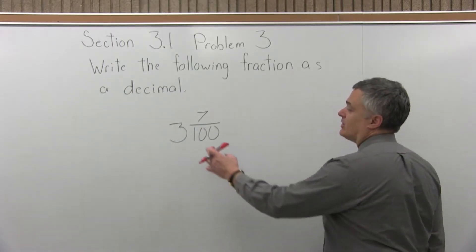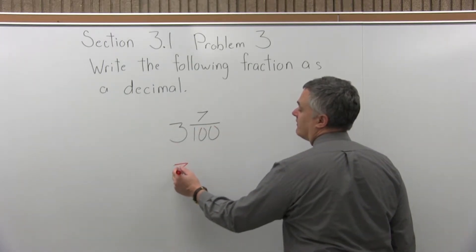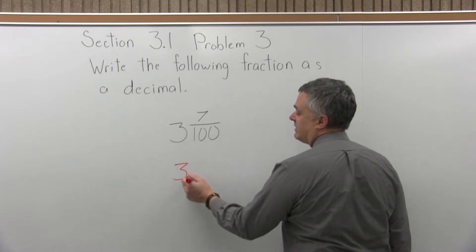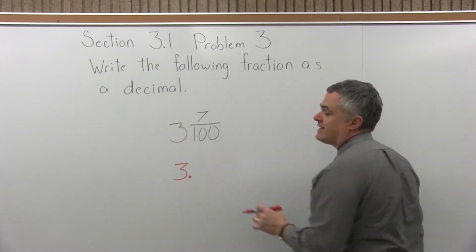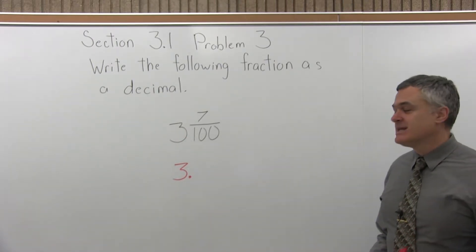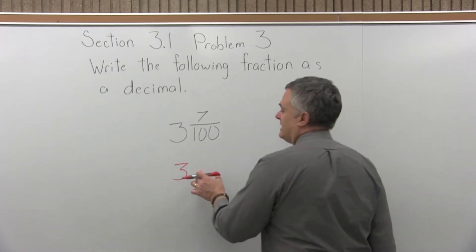So the 3 will be in front of the decimal, so we'll have a 3, a decimal, there'll be a 7, but the question is how many places after the decimal do we need?